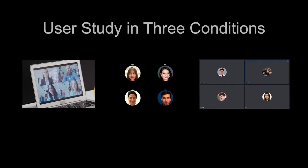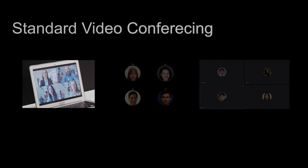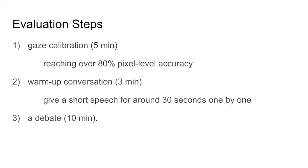To evaluate how GazeChat works and whether the design of third-person perspective and eye contact has impacts on video conferencing experience, we conducted a remote within-subject user study in three conditions: standard video conferencing, GazeChat with two variants, and audio conferencing with a static profile. Each condition consists of three parts: gaze calibration, warm-up conversation, and a debate. At the end of each session, participants fill an online questionnaire about conversation experience, user experience, and TPI.